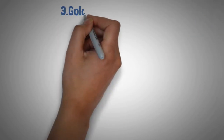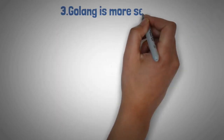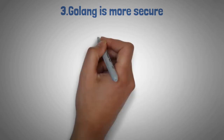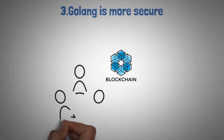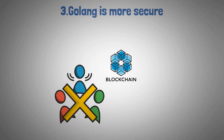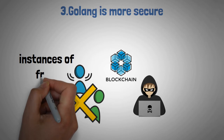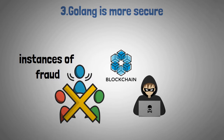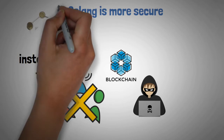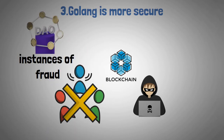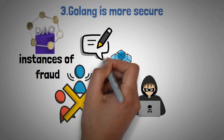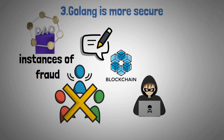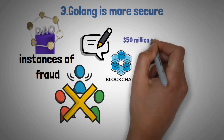The third benefit is that Golang is more secure. When it comes to blockchain security, there are two main aspects: the risk of fraud and the risk of hacking. With Solidity, there have been a few instances of fraud. For example, in 2016, there was the DAO hack, where a hacker was able to exploit a flaw in the code of a smart contract written in Solidity and make off with about 50 million dollars worth of Ether.